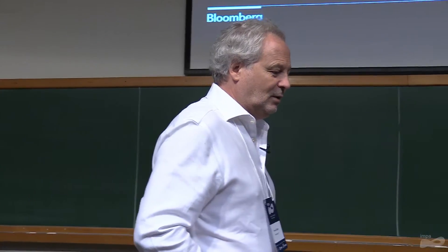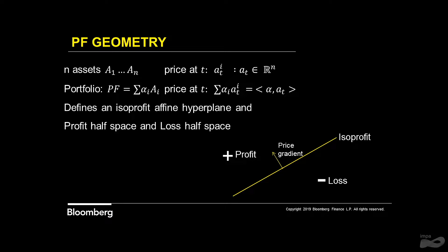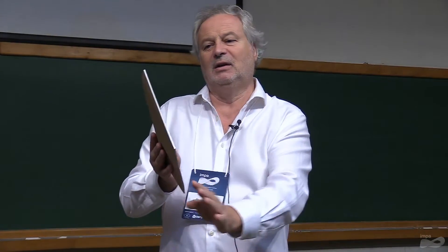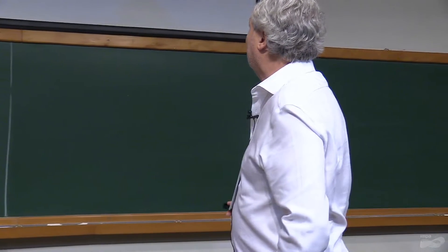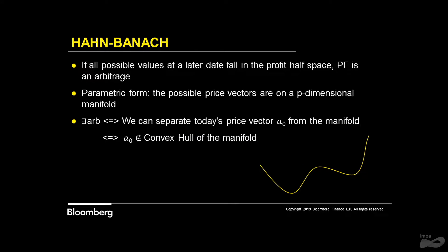Let's do some geometry of portfolios. When you have a certain number of assets and a price vector at each point in time, constituting a portfolio of these assets determines a hyperplane corresponding to scenarios where you don't make or lose money. You make money in one half-space and lose money in the other. The price gradient is orthogonal to this hyperplane. The question is: if all possible scenarios tomorrow are confined to one half-space, that corresponds to an arbitrage.